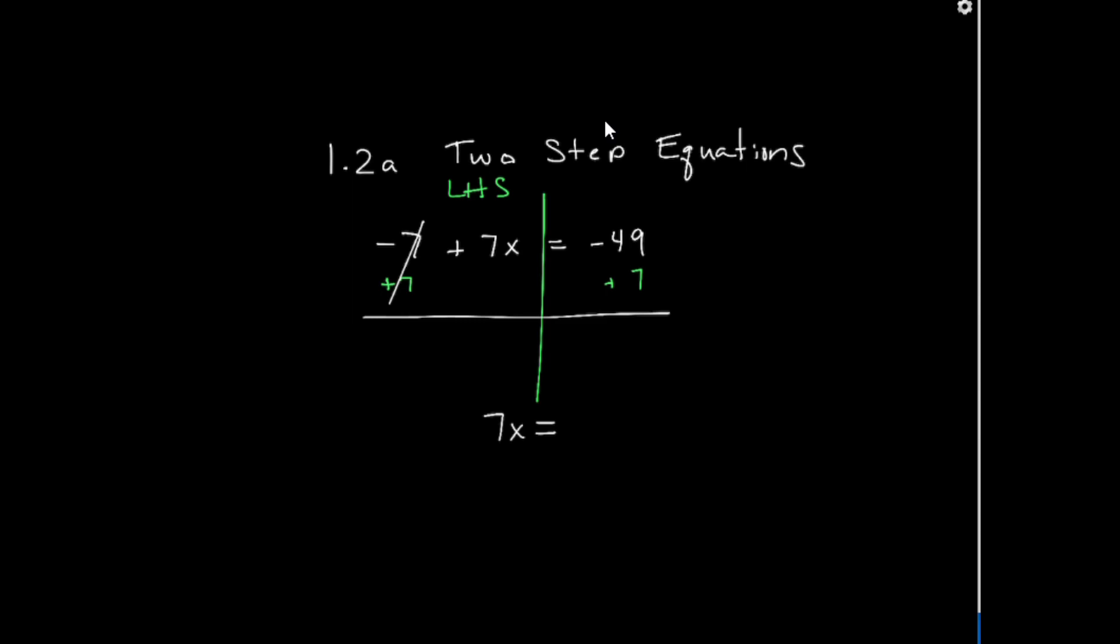my right-hand side, I need to do negative 49, and I go ahead and add 7 to that. And that leaves me with 7x is equal to negative 42.